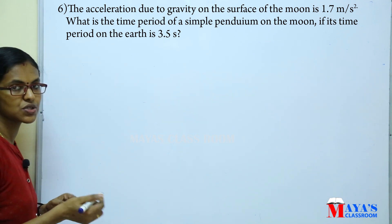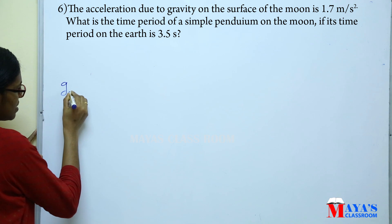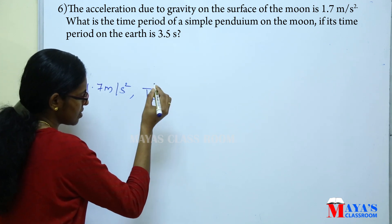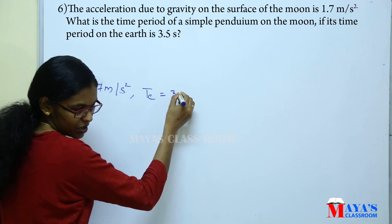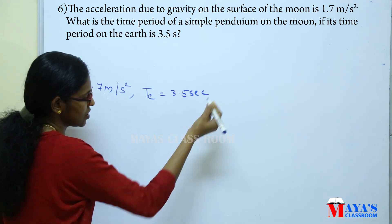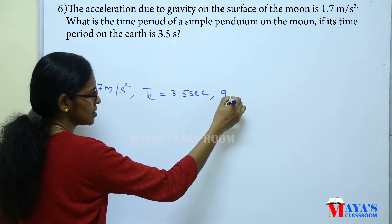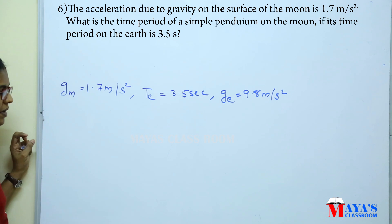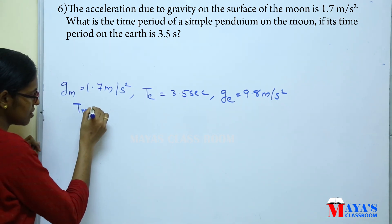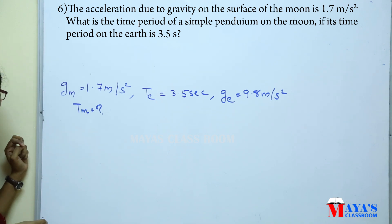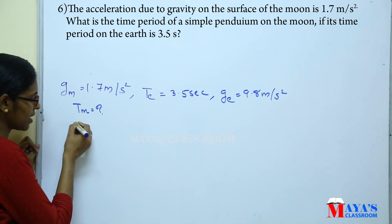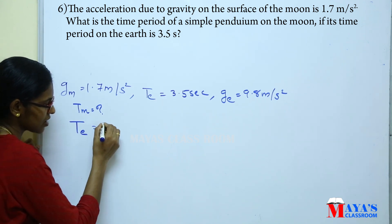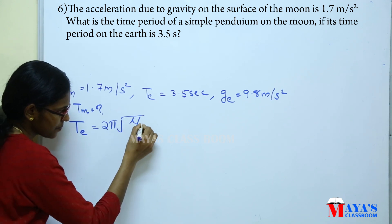Given: acceleration due to gravity on the moon is 1.7 m/s², the time period on Earth is 3.5 seconds, and acceleration due to gravity on Earth is 9.8 m/s². The time period is given by T = 2π root of (L/g).